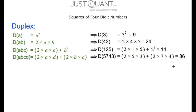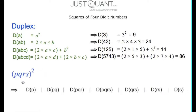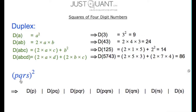Now with this knowledge of duplexes, we will see how we can square 4 digit numbers easily. Consider a general 4 digit number, say p q r s. The square of p q r s will have 7 parts. During calculations, we shall pass from the right-most duplex to the left-most duplex. The right-most part will be duplex of s. The next part will be duplex of r s. The one after that will be duplex of q r s. The middle part will be duplex of p q r s. The next part will be duplex of p q r. The one after that will be duplex of p q. And finally, the left-most part will be duplex of p.